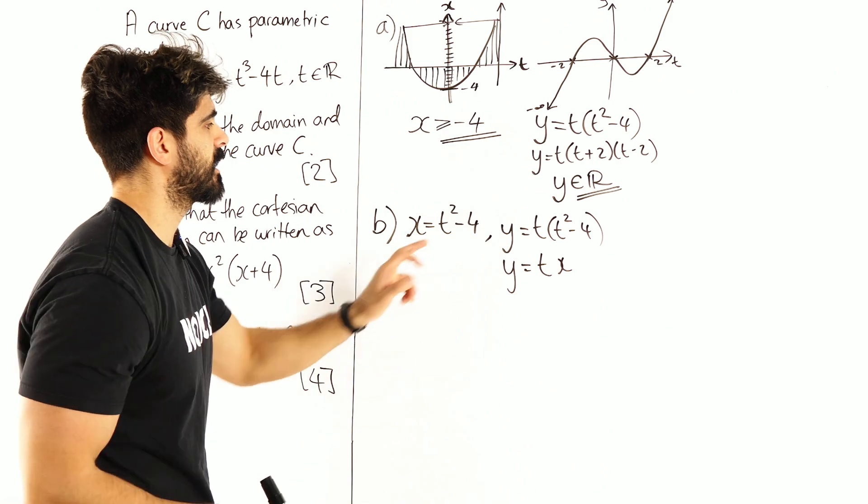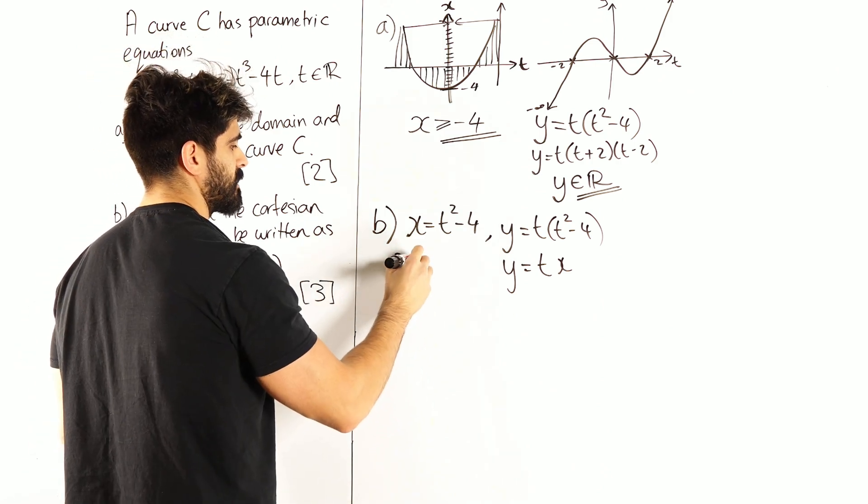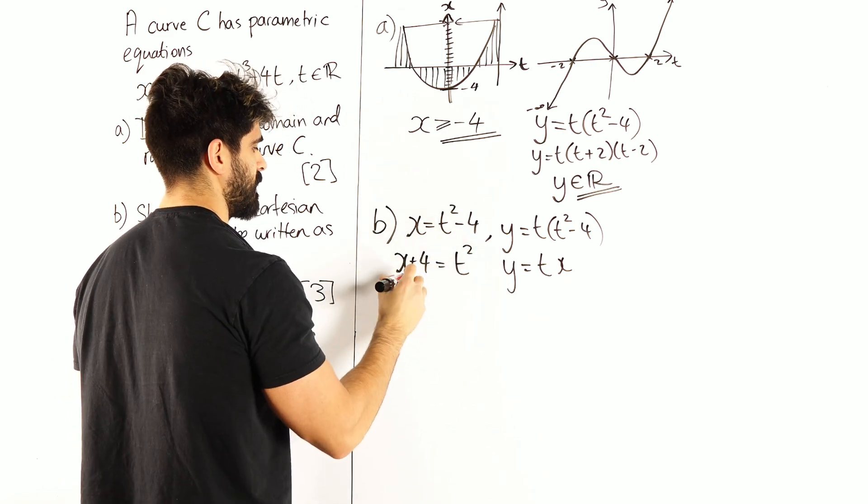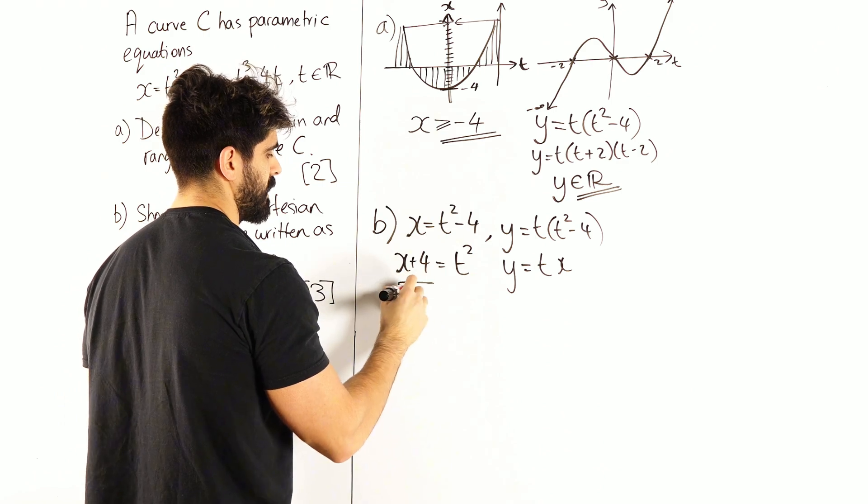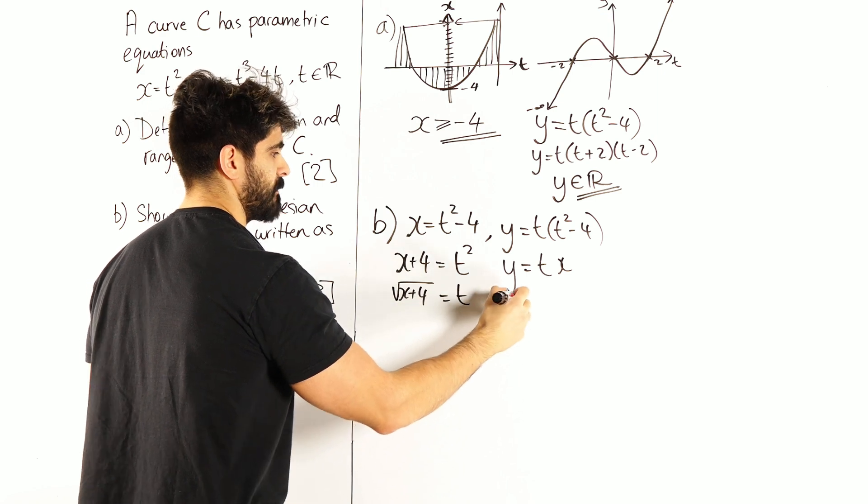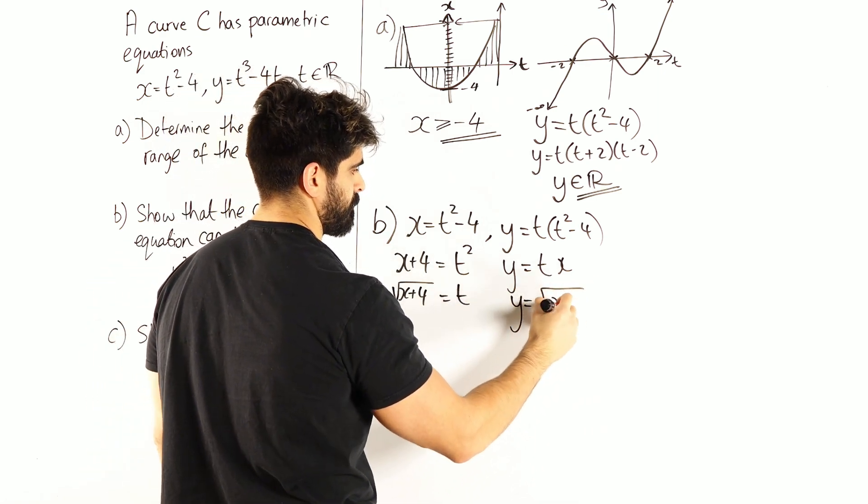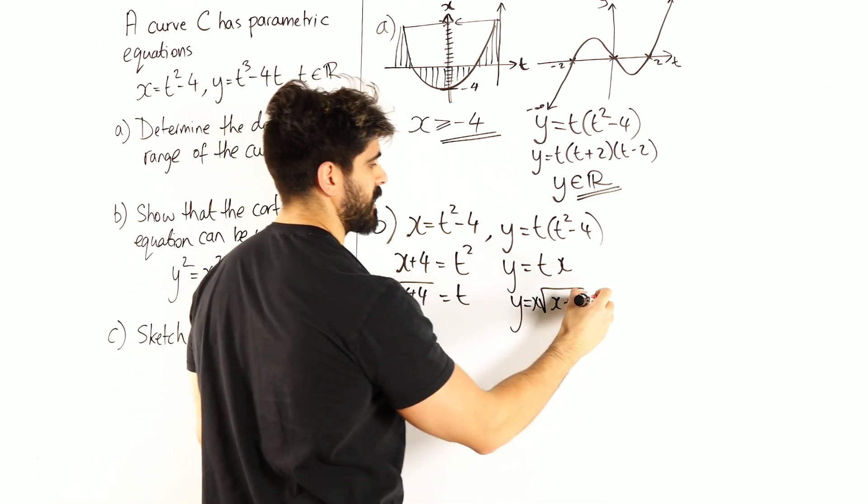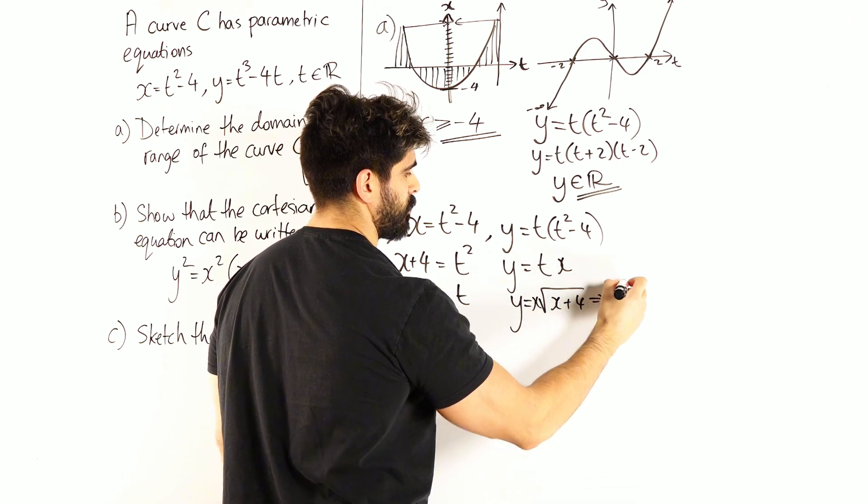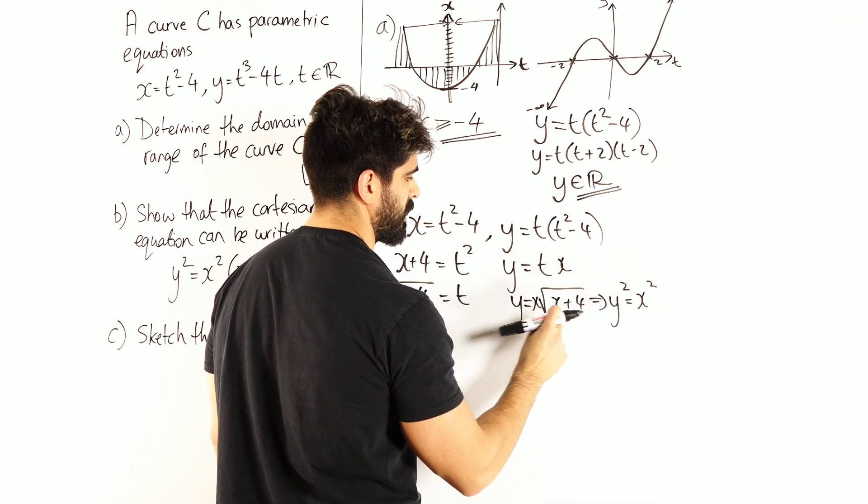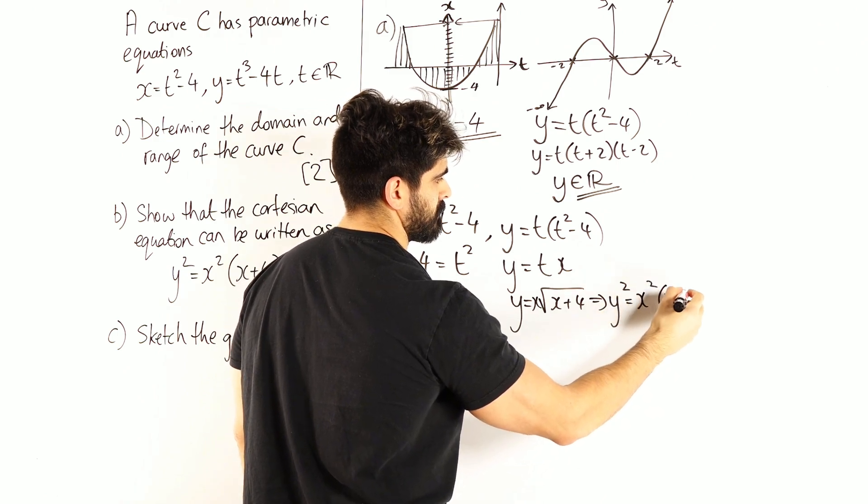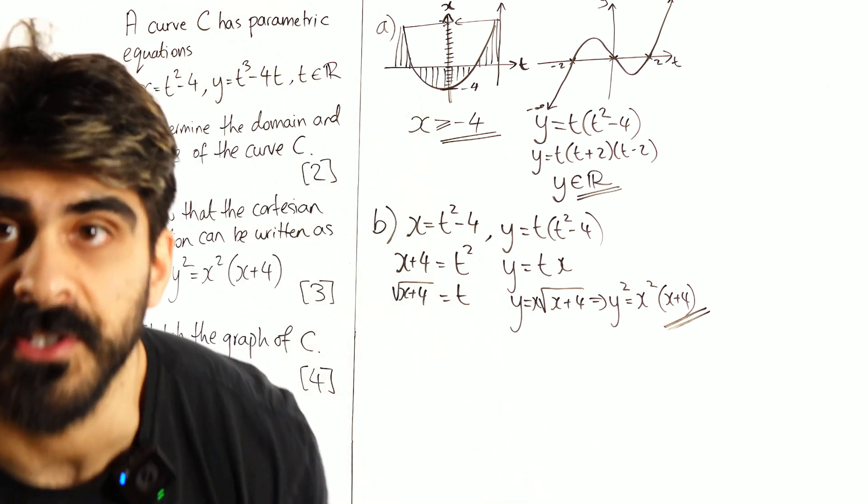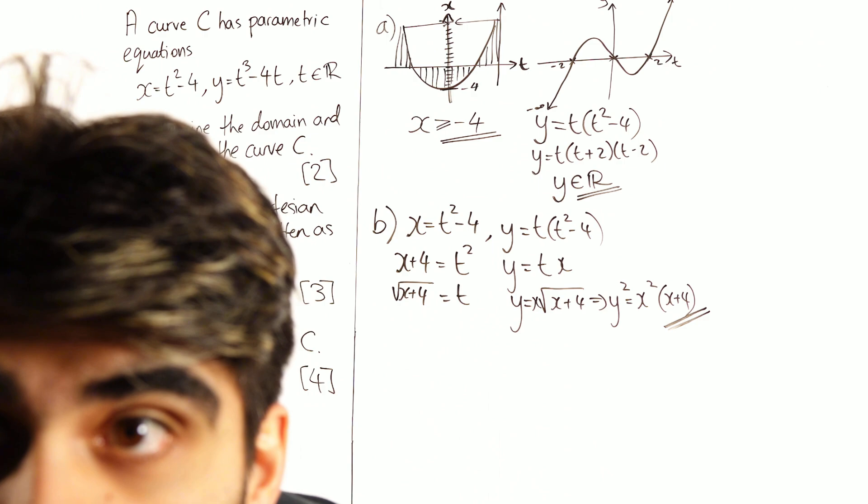So I have y is tx, I just need to work out t, I can rearrange this. So I get x plus 4 is t squared, and I'm going to root both sides. So I get root x plus 4 is t, sub that in here, and just put the x first. And then we square both sides. So we get y squared is x squared. Okay, that's proved. Can you guys see that properly? Let's go.